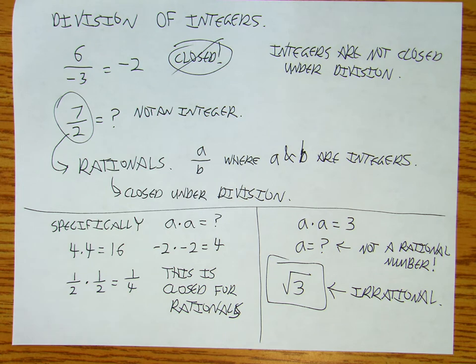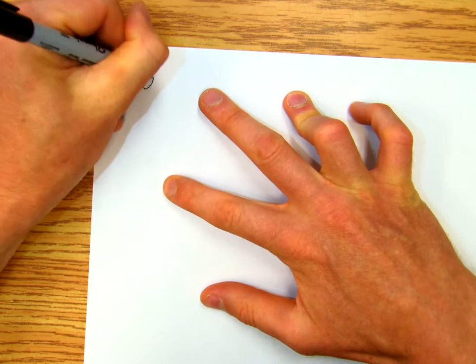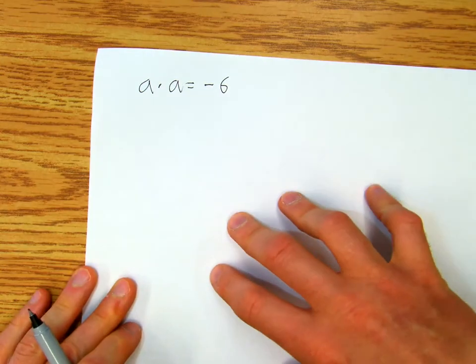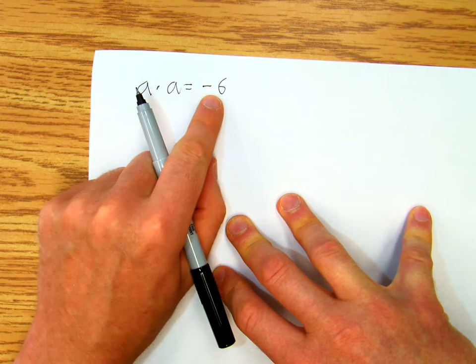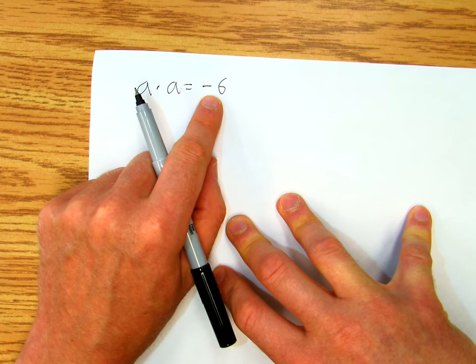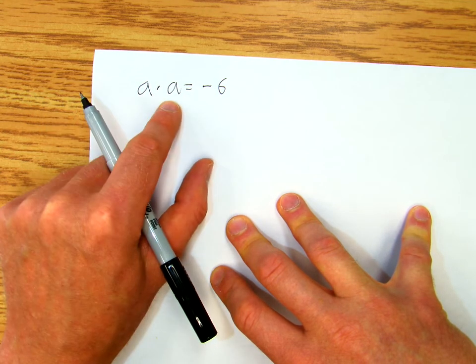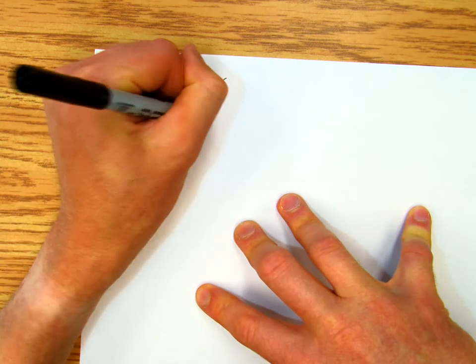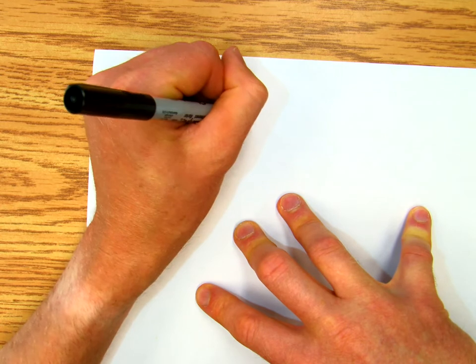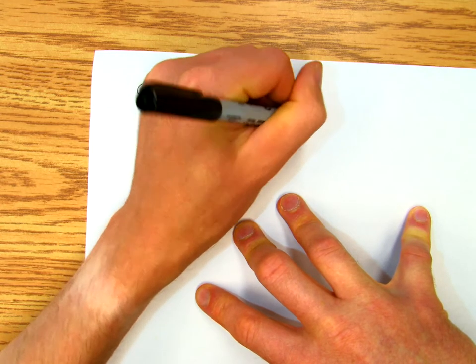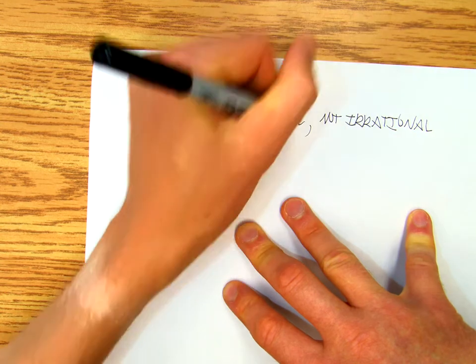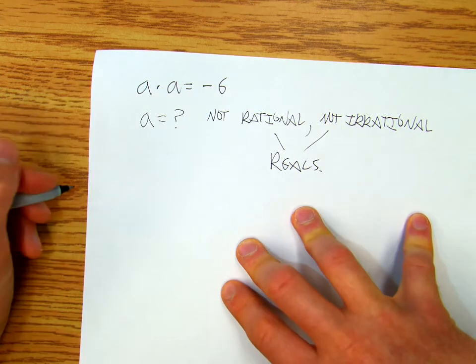But then suppose I take it another step forward. I'm going to continue with this same idea: a times a equals negative 6. Fine. Negative 6 is a perfectly wonderful integer. So I want two numbers that when they multiply together make negative 6. So A equals... Well, it's not rational, not irrational. These two make up the reals, so it's imaginary.